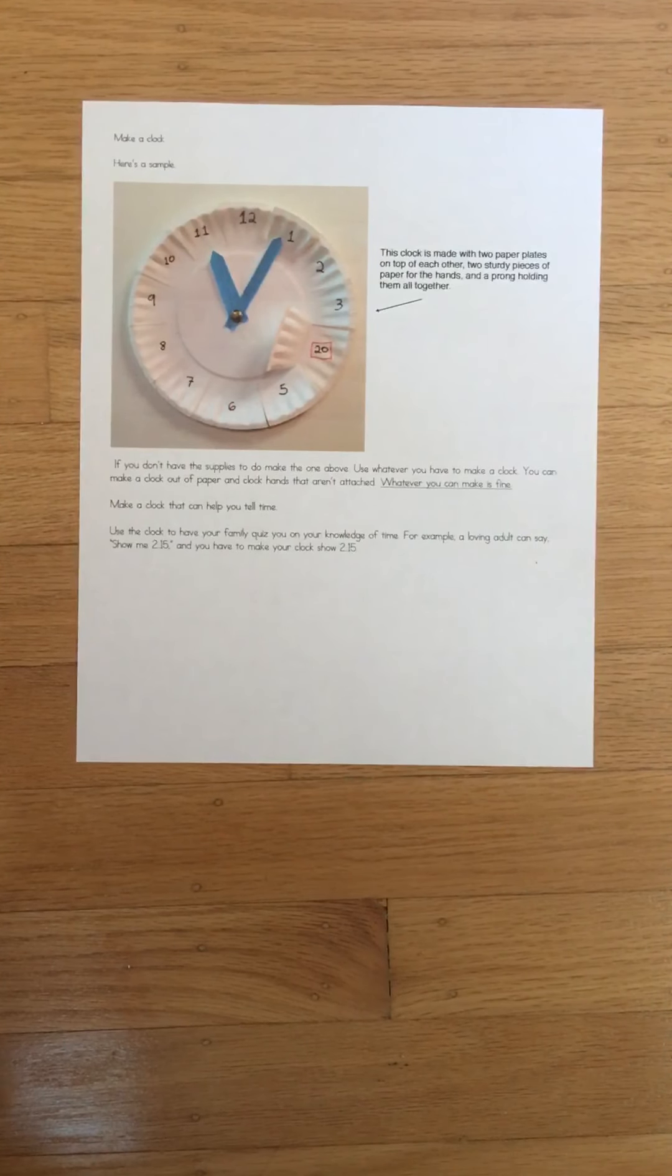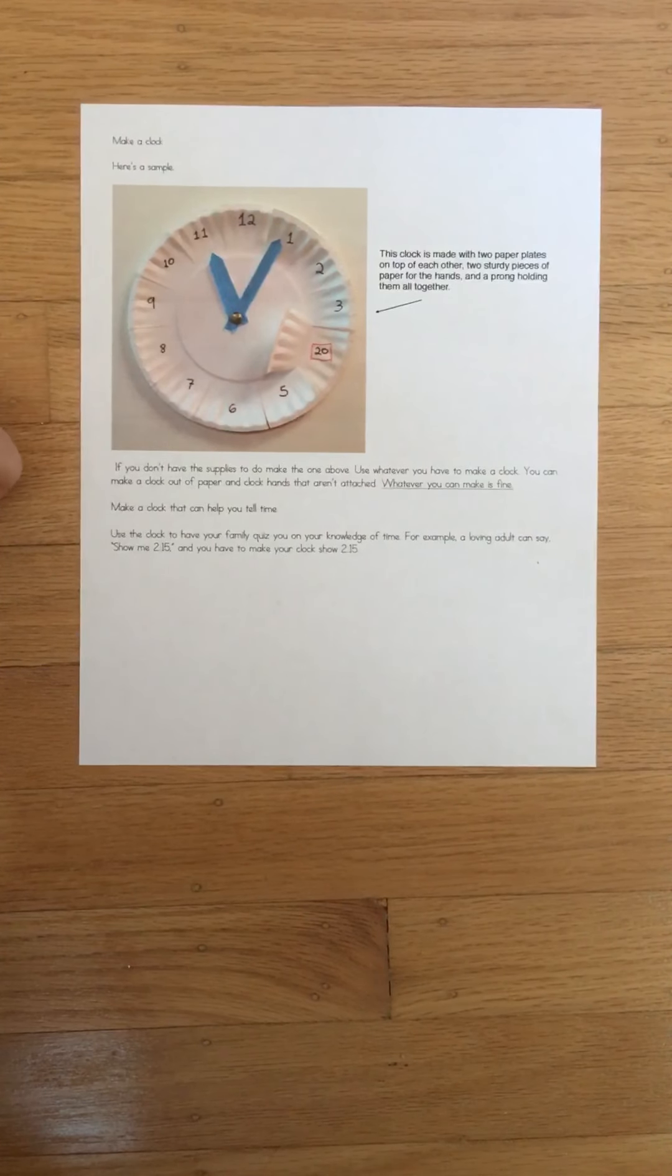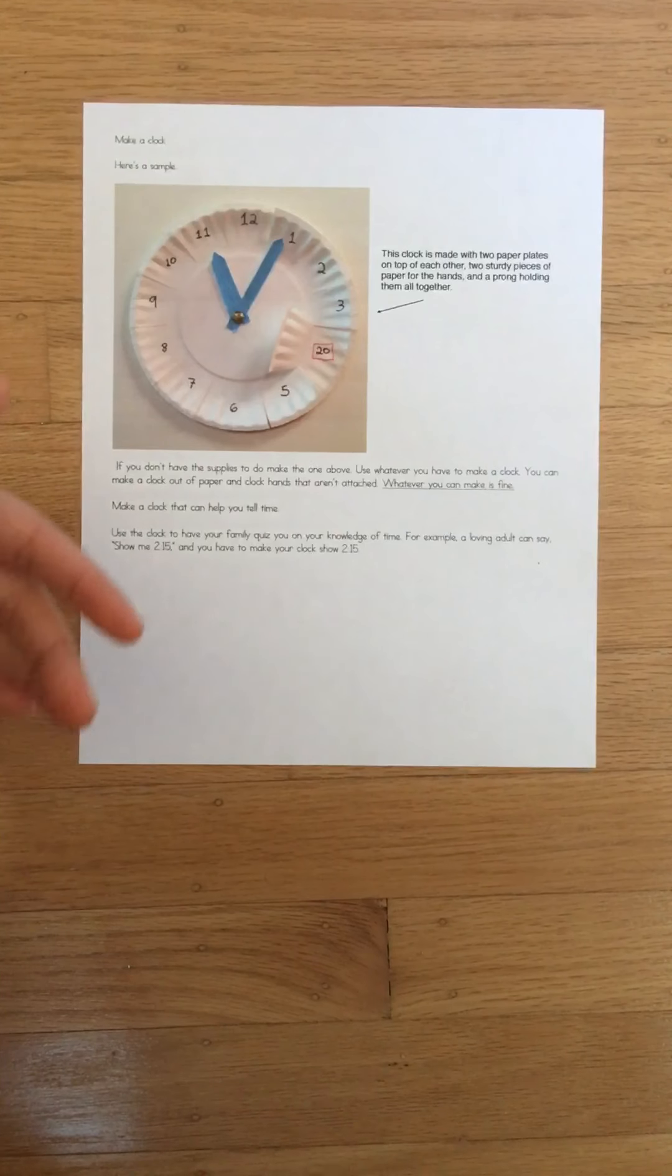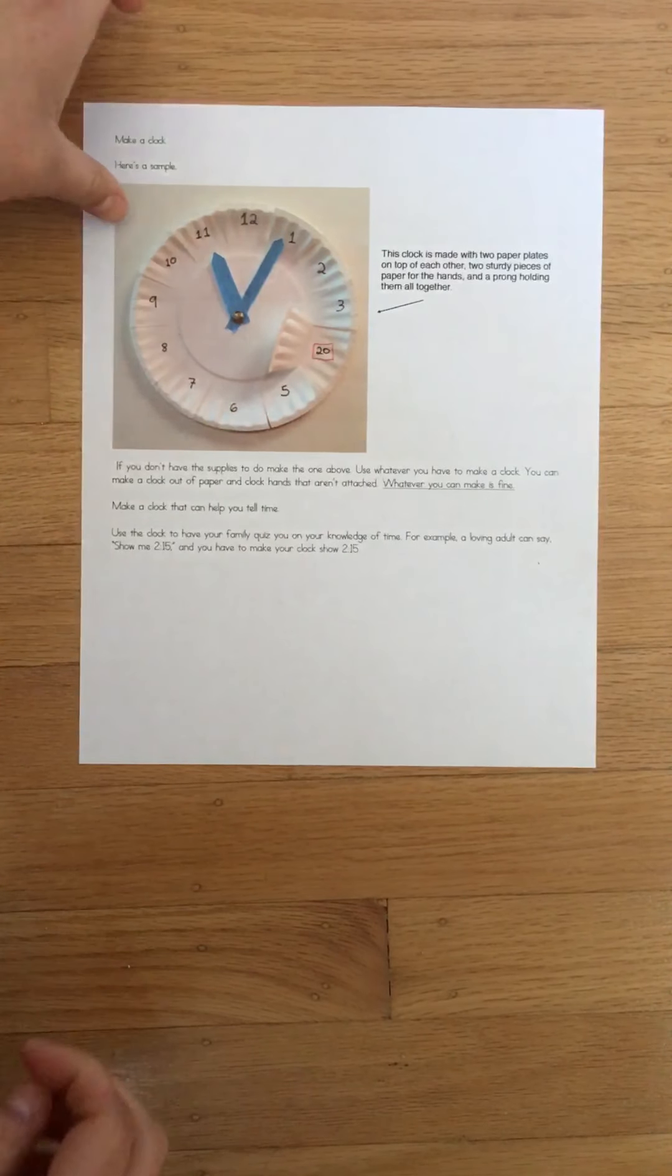I'd like you all to make a clock out of whatever materials you can find at home. This happens to be a sample of a clock made out of paper plates. They made some hands out of sturdy paper, maybe like cardstock. Use whatever you happen to have. If you don't have paper plates, use two pieces of paper. Maybe there's some old cereal boxes you can cut up to create a clock for yourself. Any materials you have are fine.